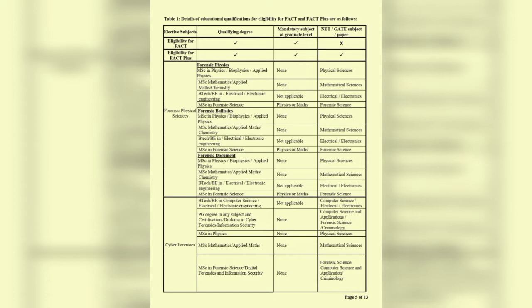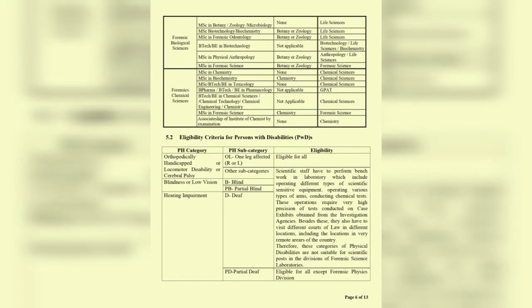Bachelors in Forensic Science students cannot apply. Master's students can apply, but they have specific subject requirements. For chemical sciences, chemistry must have been present in every year of graduation. Life science and chemistry students can apply. For biology and serology, biology/botany/zoology must be present in every semester. Botany, zoology, and life science students can all apply. Essentially, BSc Forensic Science has been completely excluded from FACT and FACT Plus, which ideally should not have been the case.